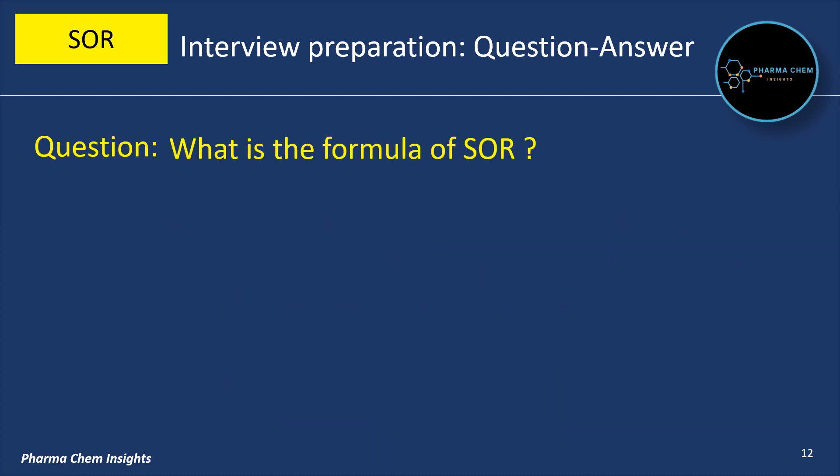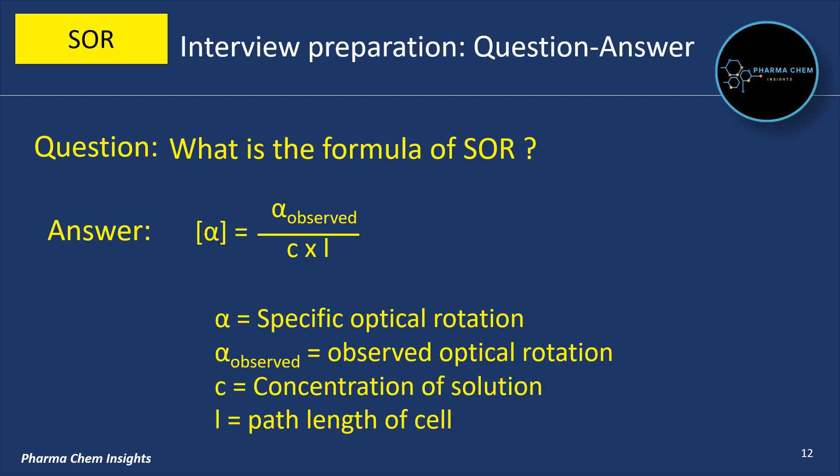What is the formula of SOR? The formula for SOR is: alpha equals alpha observed divided by C into L. Alpha is the specific optical rotation, alpha observed is the observed optical rotation, C is the concentration of the solution, and L is the path length of the cell.